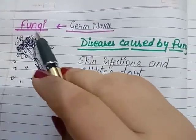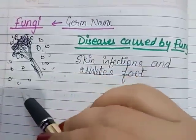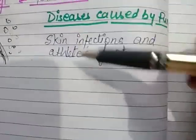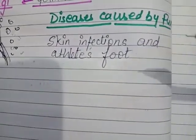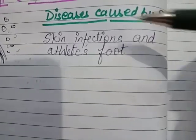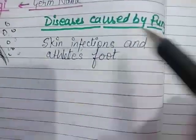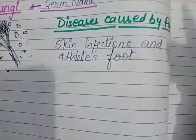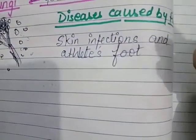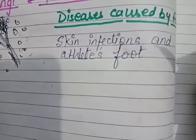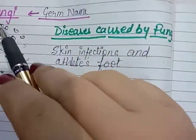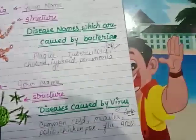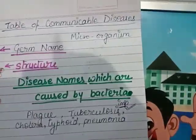The next and last microorganism is fungi. The germ name is fungi. You can see the structure I have made here. The diseases caused by fungi are skin infections — basically all skin infections are caused by fungi — and athlete's foot. Ringworm is also a fungal infection. These infections are especially common in the summers. This is all about communicable diseases.